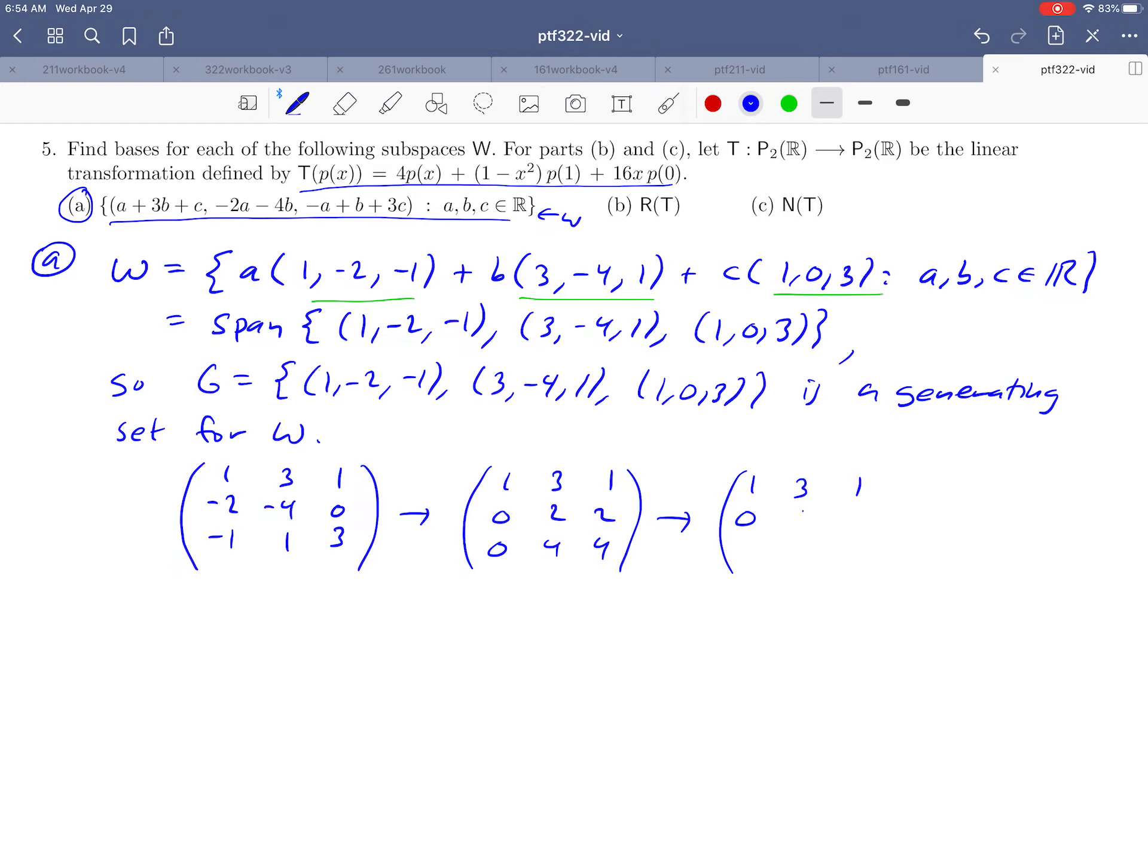So if you do another row operation, maybe reduce the (2, 2) down to a (1, 1) by dividing through by two, you're going to get a row of zeros down here. So there's an echelon form for your matrix.